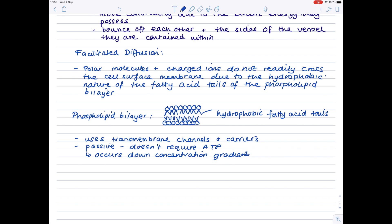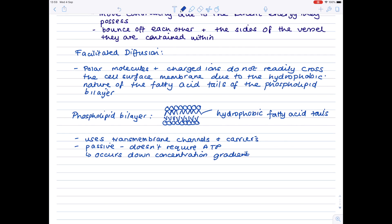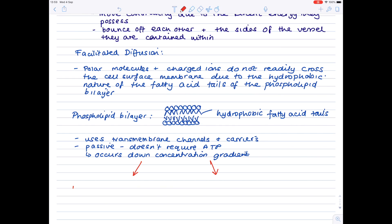Now we're going to talk in great detail now about these transmembrane channels, and they are subdivided into two categories. Number one, protein channels. Number two, carrier proteins.